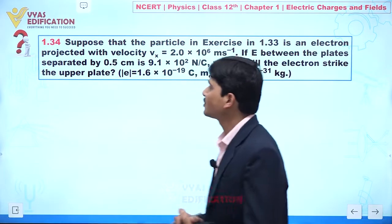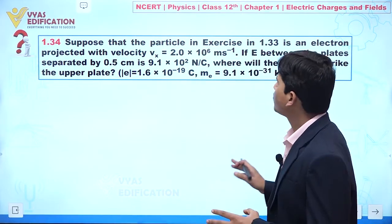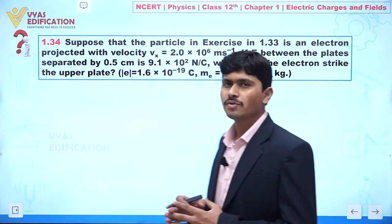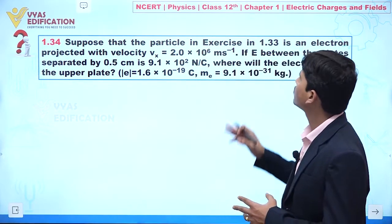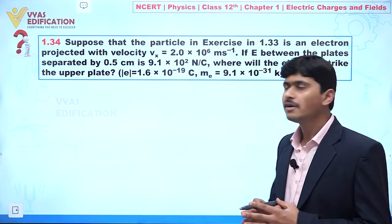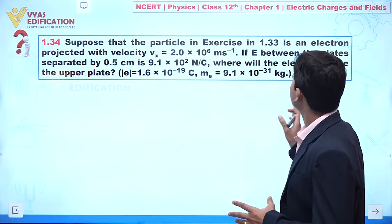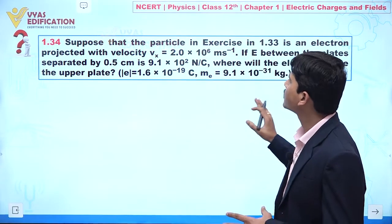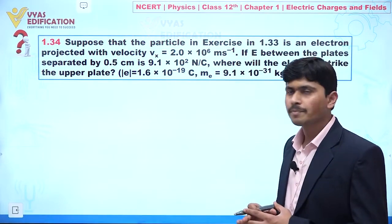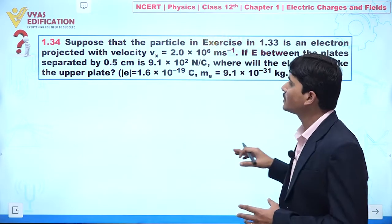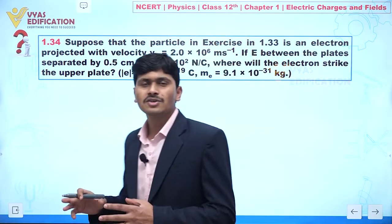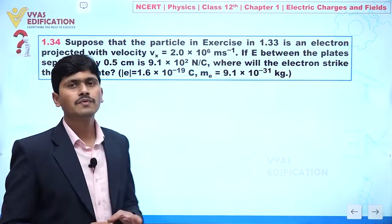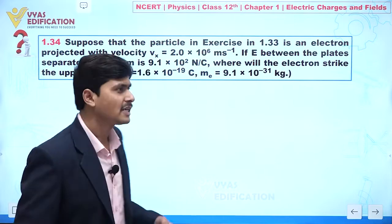We are going to discuss question 1.34. Suppose the particle in exercise 1.33 is an electron projected with velocity vx equal to 2×10⁶ m/s. If E between plates separated by 0.45 cm is 9.1×10² N/C, where will the electron strike the upper plate? This is the same problem — if we replace charge q with the electron charge, we use the same formula.